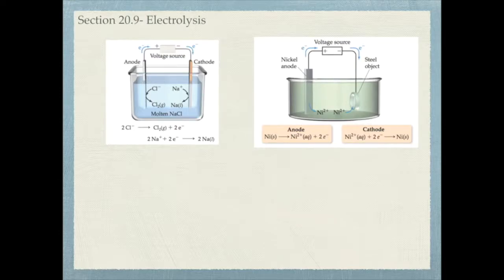Electrolysis requires energy. Here are two diagrams which show you what happens in electrolysis. Notice it's almost identical to a voltaic cell except you need some sort of voltage source for electrolysis to occur.